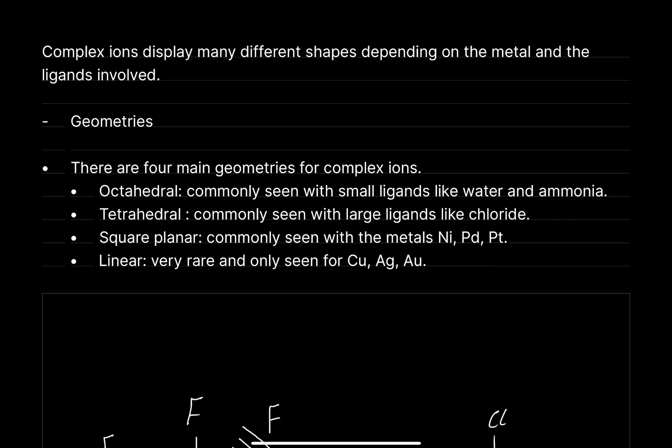Complex ions display many different shapes depending on the metal and the ligands involved. There are four main geometries for complex ions. Octahedral, which is commonly seen with small ligands like water and ammonia. Tetrahedral, which is commonly seen with large ligands like chloride ions. Square planar, which is commonly seen with metals such as nickel, palladium, and platinum. And then linear, which is very rare and only seen with copper, silver, and gold.